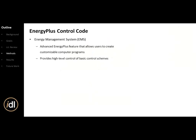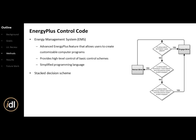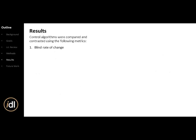The EMS system is a customizable computer program for high-level control. It takes a lot of time and effort because you essentially have to become a computer programmer. It uses a simplified language, a stacked decision scheme, conditional programming, and importantly, trend variables — you can collect data over time, such as window position over the last three hours, which is a huge part of my programming.